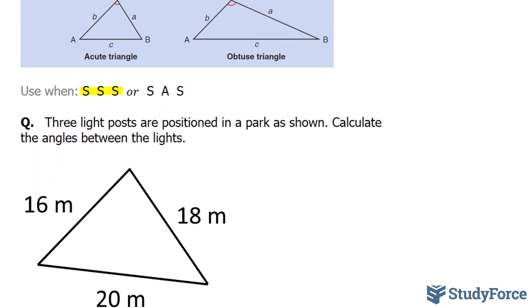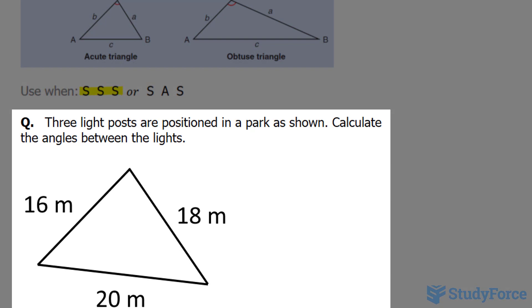The triangle we'll focus on is this one, and the question reads: three light posts are positioned in a park as shown. So assuming that this is a light post, this is a light post, and so is this.